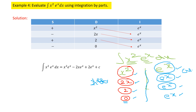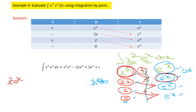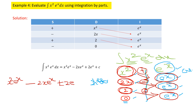Now draw diagonal arrows connecting each left-hand entry to the next right-hand entry. Assign alternating signs starting with plus: +, −, +, −. Multiply along each arrow: plus x²·eˣ, minus 2x·eˣ, plus 2·eˣ. The final answer is x²·eˣ − 2x·eˣ + 2eˣ + C.